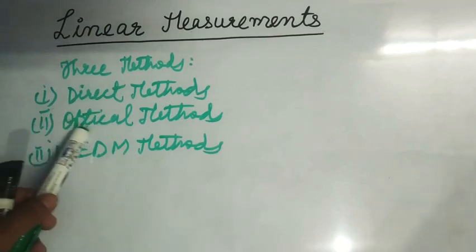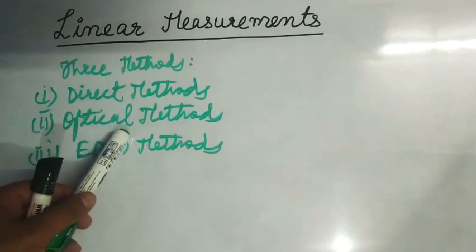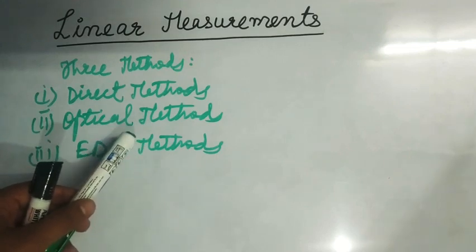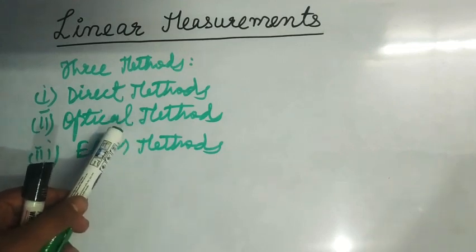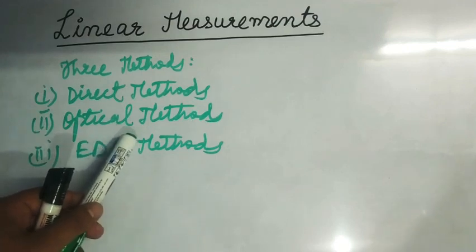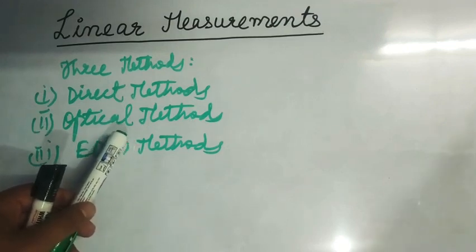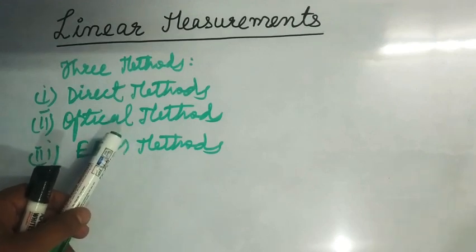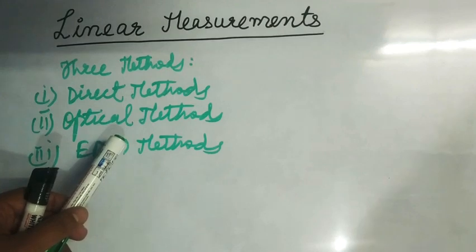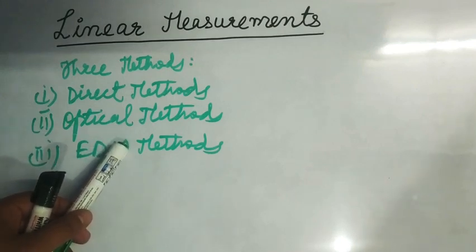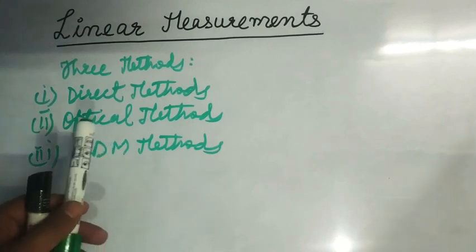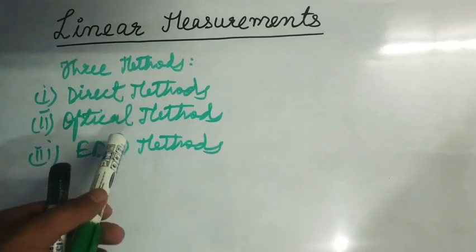In optical methods, the distance is not actually measured in the field — it is computed indirectly. The principles of optics are used to determine the distance. Generally we use a special type of theodolite fitted with a stadia diaphragm. That instrument is called a tachymeter. We will study about tachymeter and tachymetry in further lectures.